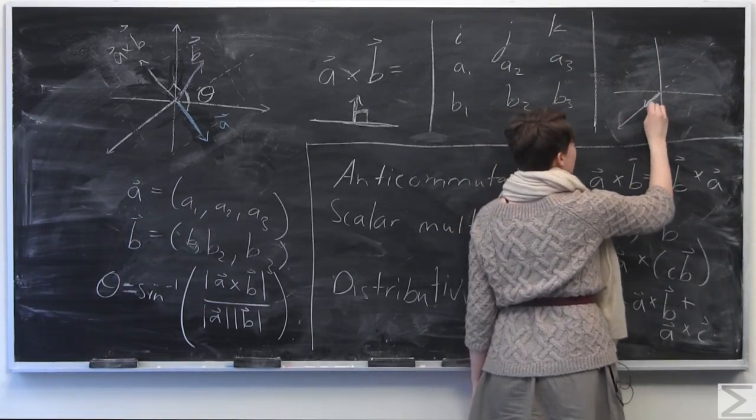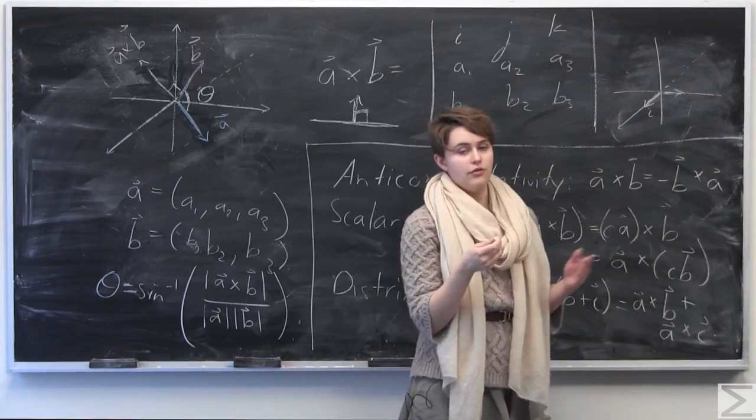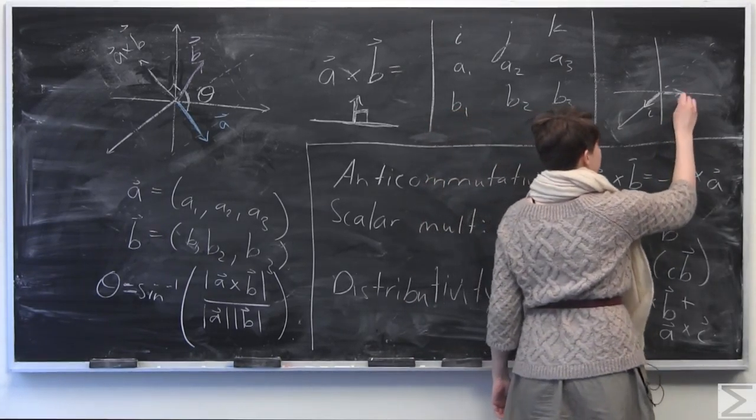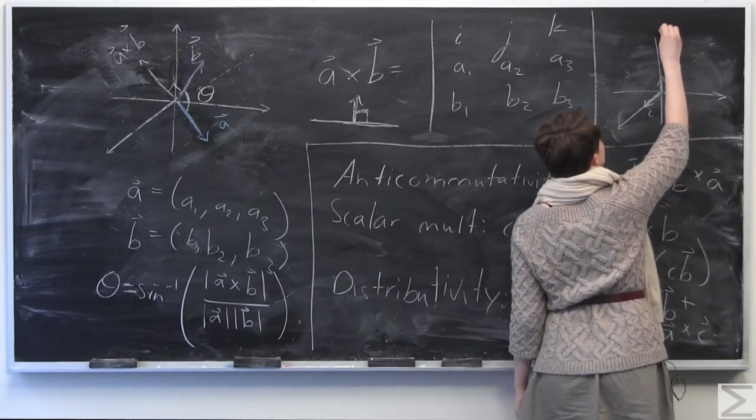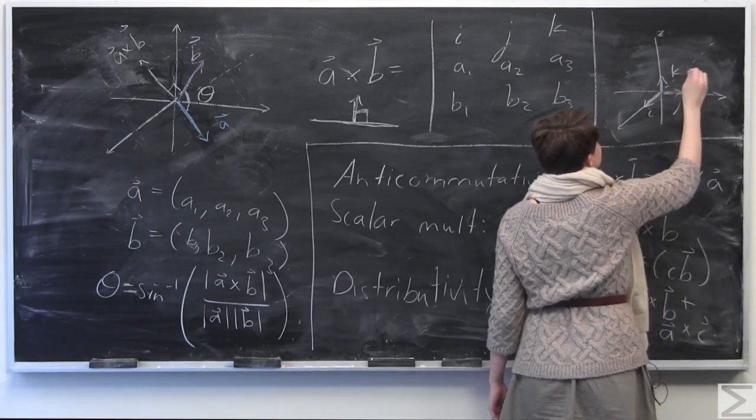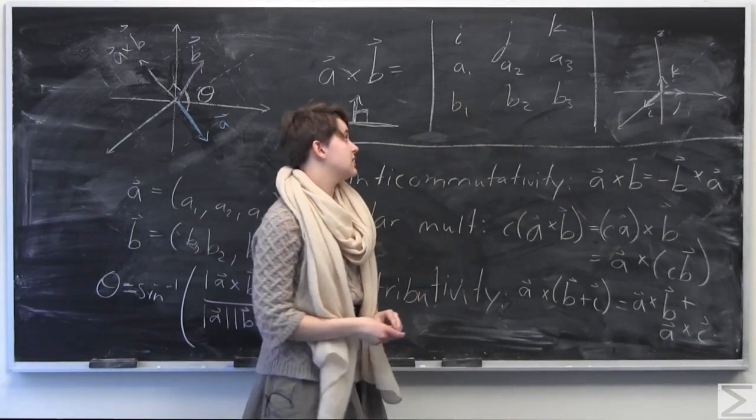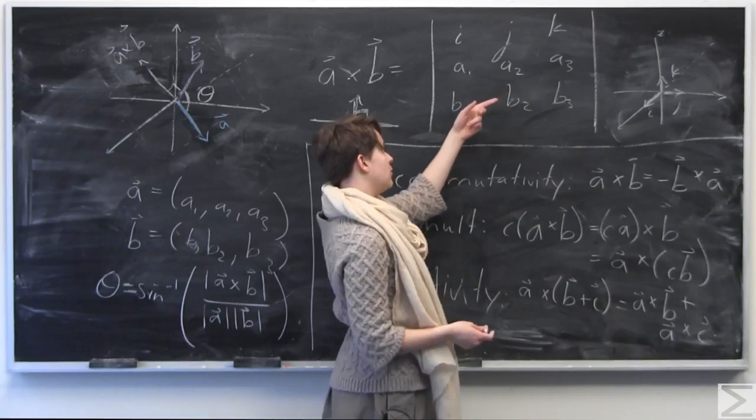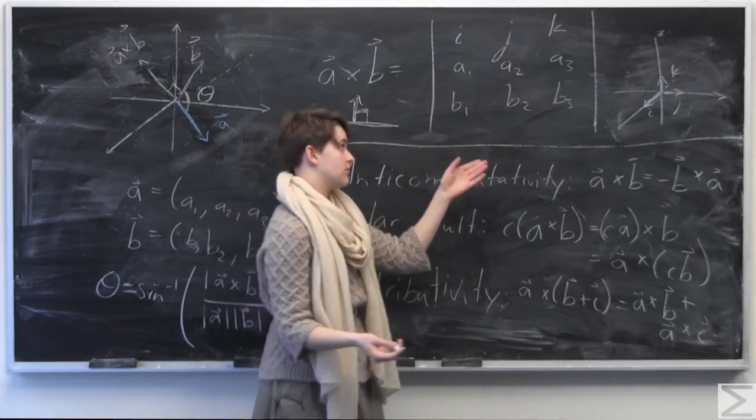And if you're wondering, OK, I don't remember what that is. So i, j, and k are just the unit vectors in R3. So i would just be the unit vector in the x direction here. So we have i, j would be the unit vector, so just the vector of magnitude 1. j would be the unit vector in the y direction. And k would be the unit vector in the z direction.